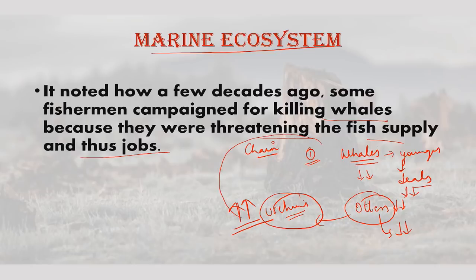You can see there was a chain of events here. If something goes wrong at one level, it will ultimately affect the whole circle — the whole food chain and the food web. This is about the marine ecosystem and how biodiversity starts degrading.